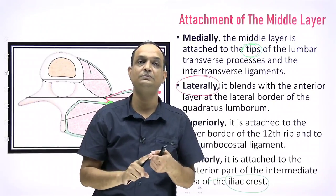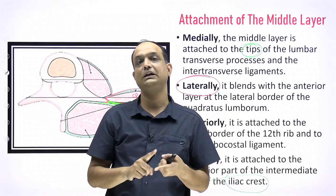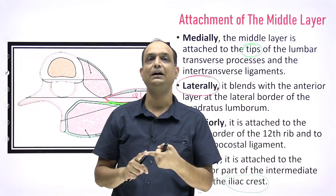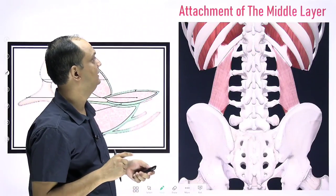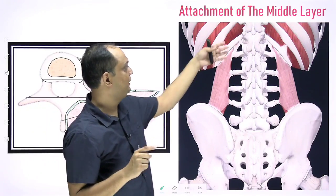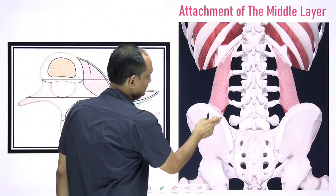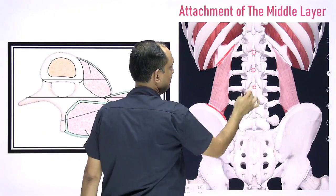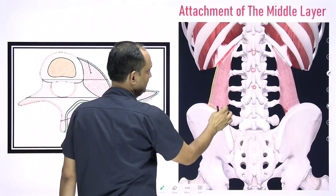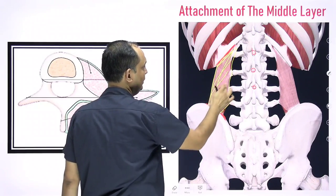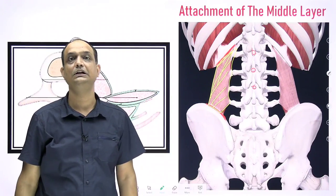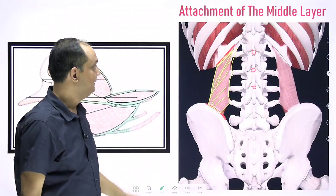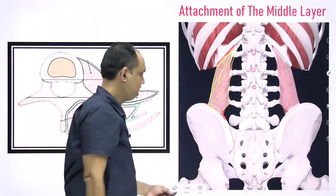The thoraco in thoracolumbar comes from the posterior layer, not the anterior or middle layer. The anterior and middle layers are present only in the lumbar region, but the posterior layer extends into the thoracic and cervical regions. When viewing from the posterior side, you can see the iliac crest below and the 12th rib above. The covering seen on the posterior surface of the muscles is the middle layer, while the posterior layer is the most posterior — the outermost layer.